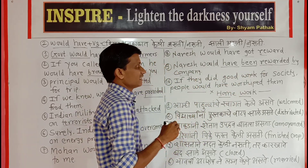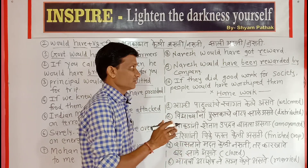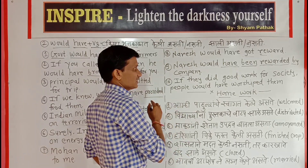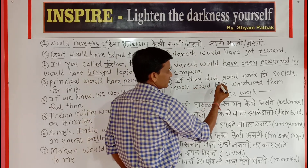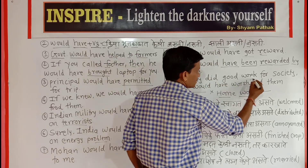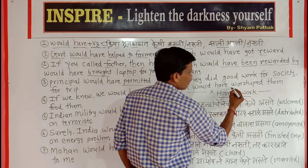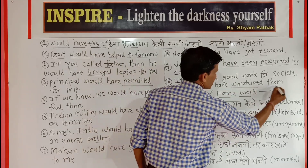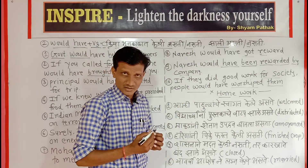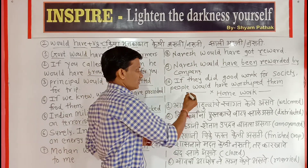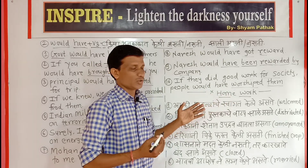Here, 'Company kadun Narish la bakshis dila gela ashtra' — the company rewarded Narish. Our next sentence: 'If they did good work for society, people would have worshipped them.' In Marathi: 'Zer tanne samaj sahti changla kama kela ashtra, tare lokan nii tenshi pujja kela ashtra.'